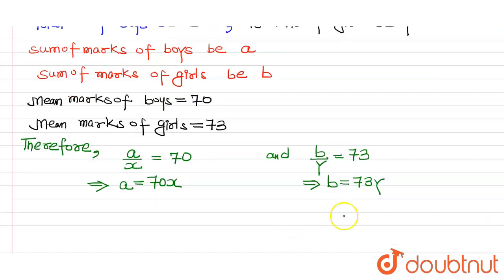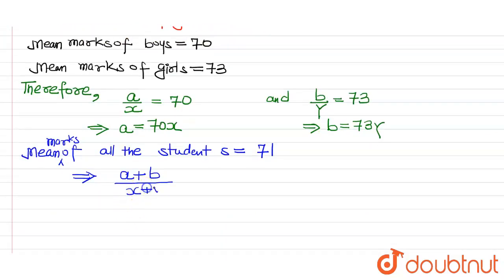Now, the mean marks of all students is given as 71. Mean marks of all the students is 71. So that implies a plus b upon x plus y equals 71.